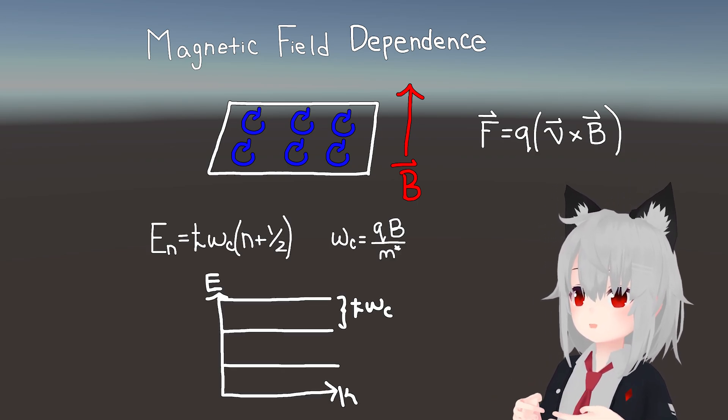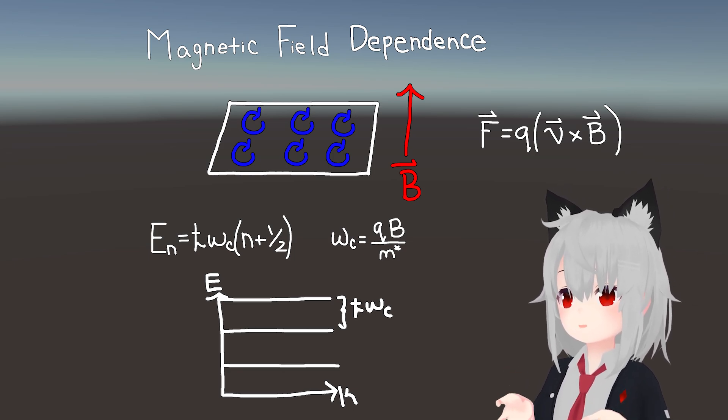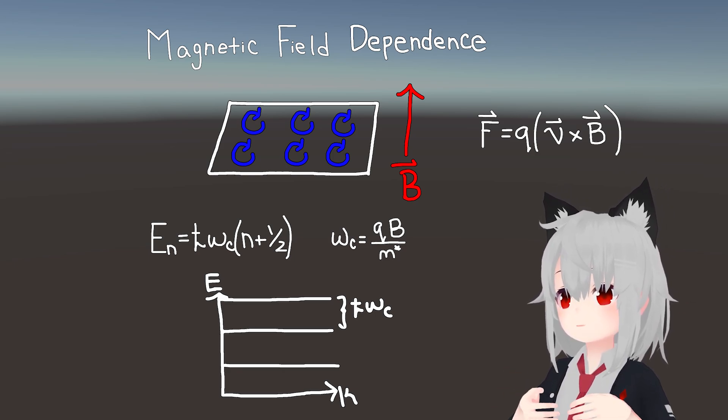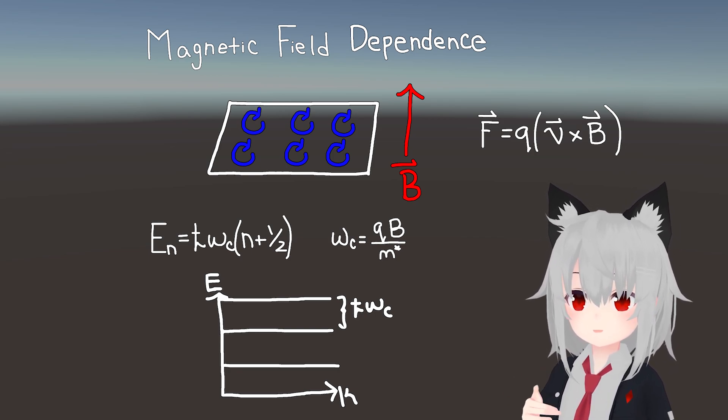giving you a dispersion relation whose energy levels are all spaced apart, with a spacing that depends on the strength of the magnetic field. This is basically a gap system, and if the Fermi level lies inside of one of these gaps, then you'll get a highly resistive response, as usual.